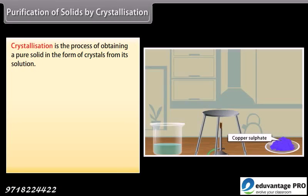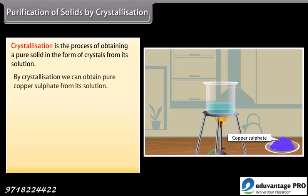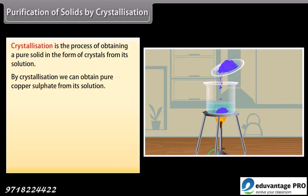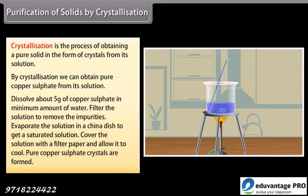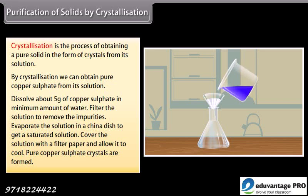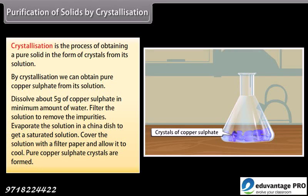Purification of solids by crystallization: Crystallization is the process of obtaining a pure solid in the form of crystals from its solution. By crystallization, we can obtain pure copper sulfate from its solution. Dissolve about 5 grams of copper sulfate in minimum amount of water. Filter the solution to remove the impurities. Evaporate the solution in a china dish to get a saturated solution. Cover the solution with a filter paper and allow it to cool. You will see pure copper sulfate crystals are formed.